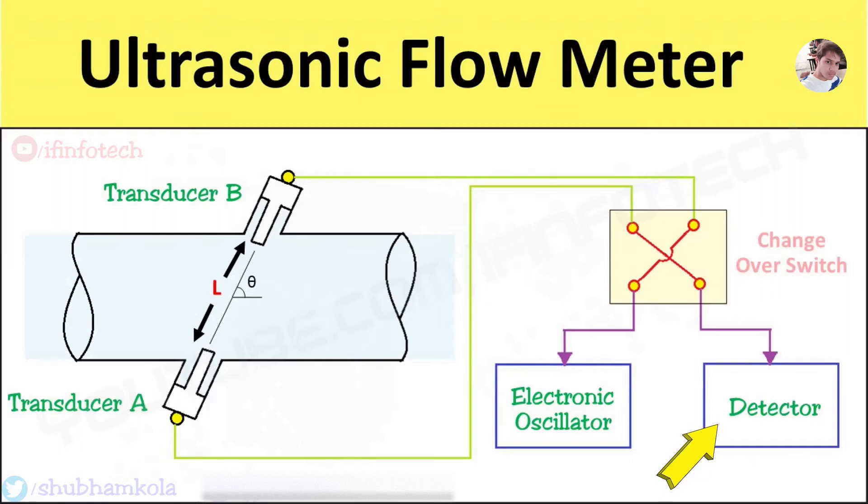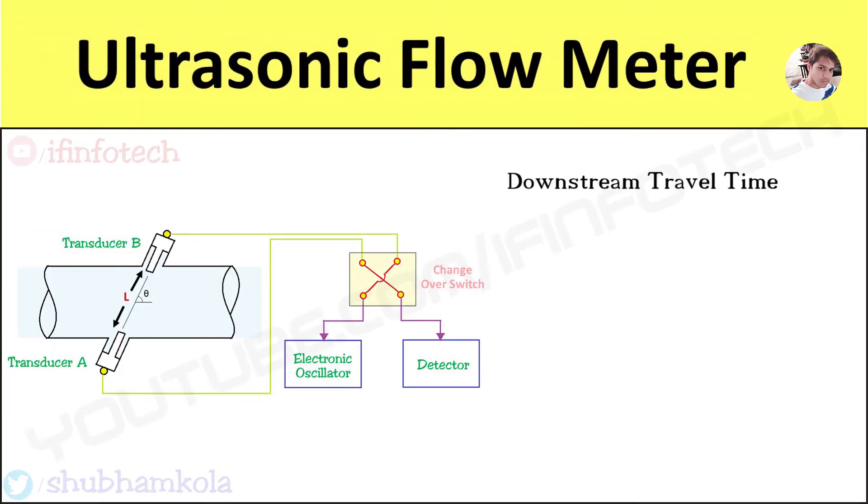Here, downstream travel time is the time for ultrasonic energy to go from transducer A to transducer B, and is given by the expression TAB equals L divided by C plus V cos theta. Here, C is the speed of sound in fluid, L is the acoustic path length in fluid, and theta is the angle of path with respect to pipe axis.